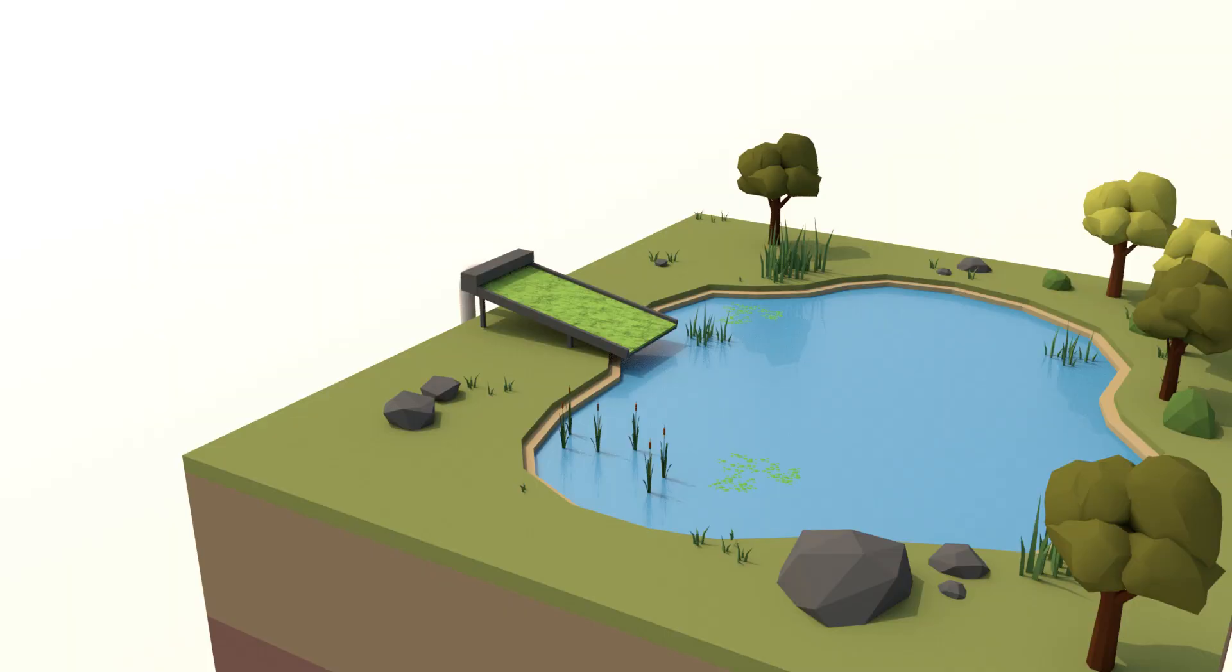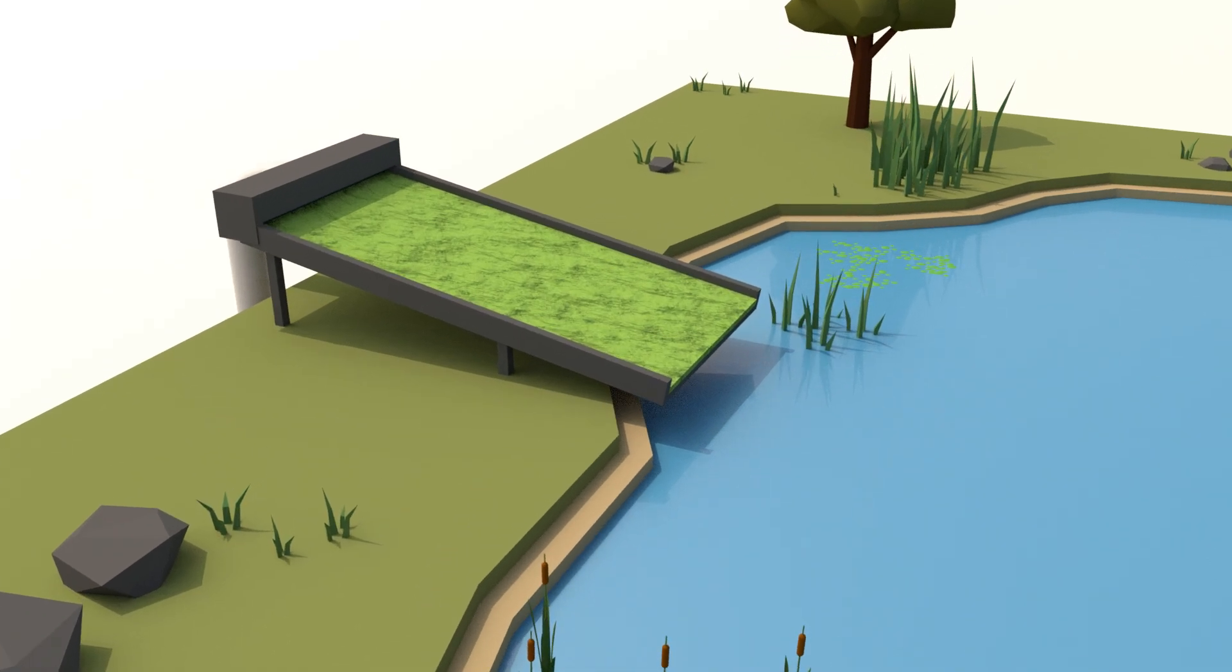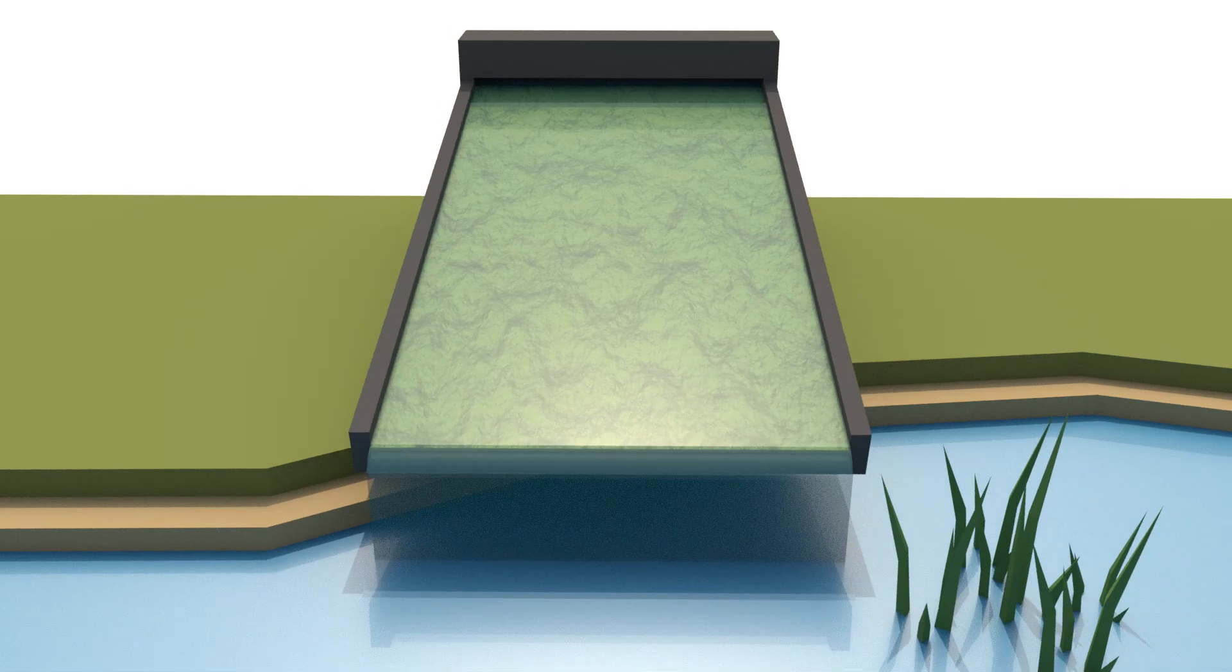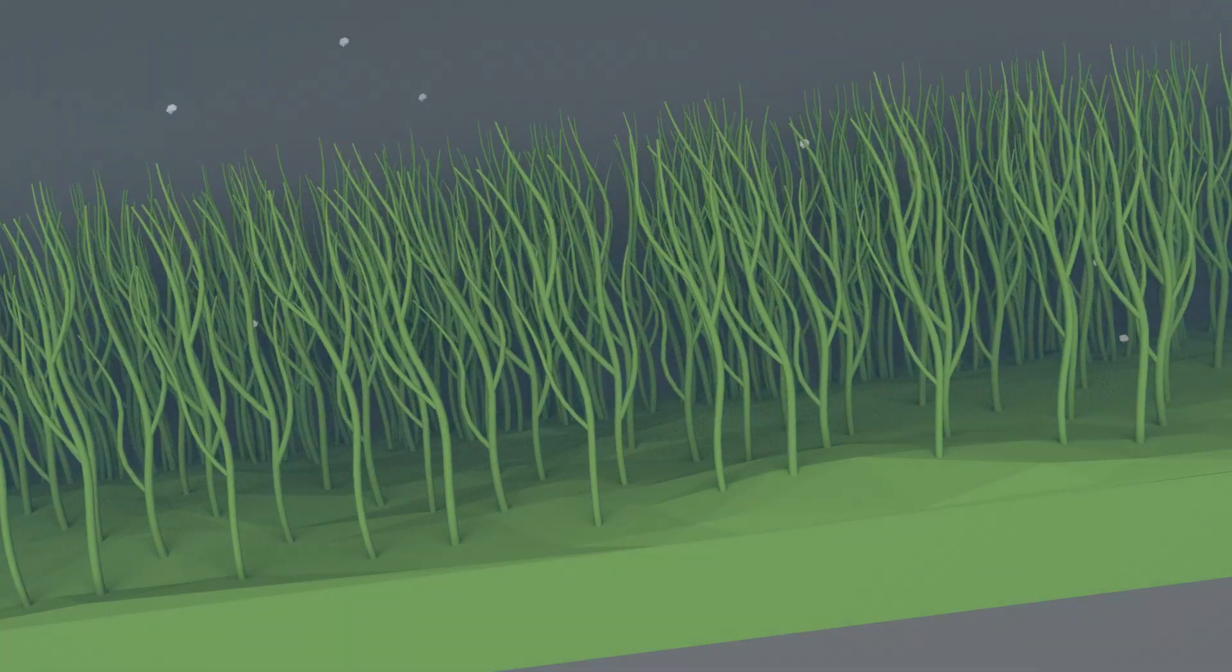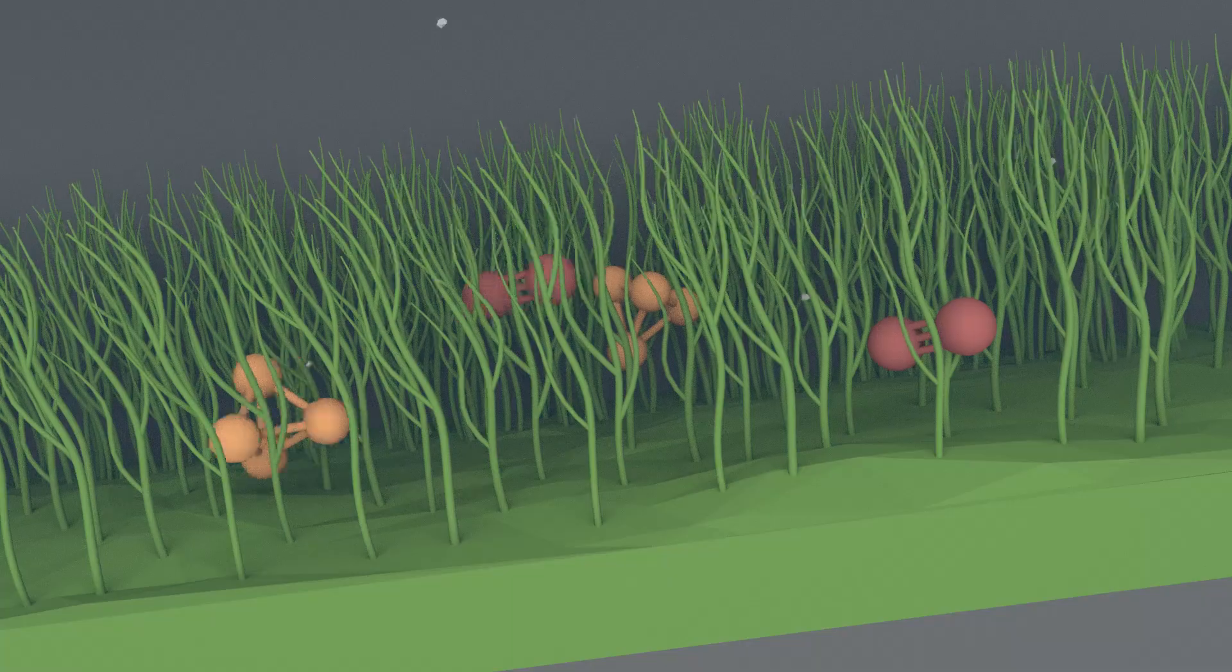One solution for keeping algae and the nutrients in check are algal turf scrubbers. Algal turf scrubbers work by passing a shallow stream of polluted water over a trough colonized by algae. As the water flows over the algae, the algae take up the excess nutrients, removing it from the water flow.